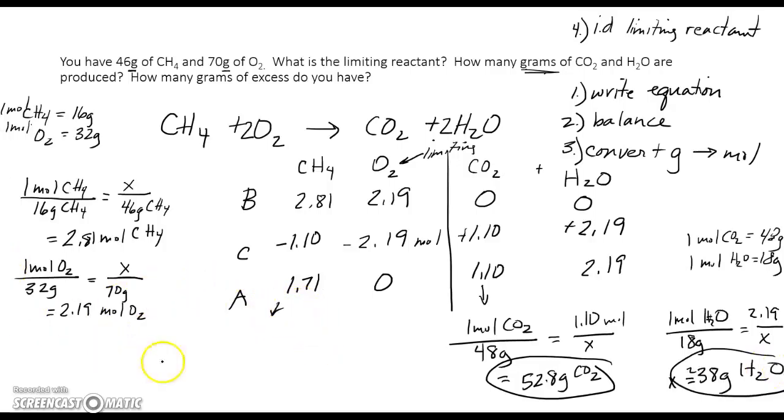The last question is, how much excess is left over in grams? I have 1.17 moles of this. And I know that the ratio for CH4 for grams to moles is that 1 mole CH4 is equal to 16 grams. And I cross-multiply. And when I do cross-multiply, I should get a number of 27.36 grams. And that answers all of those questions.